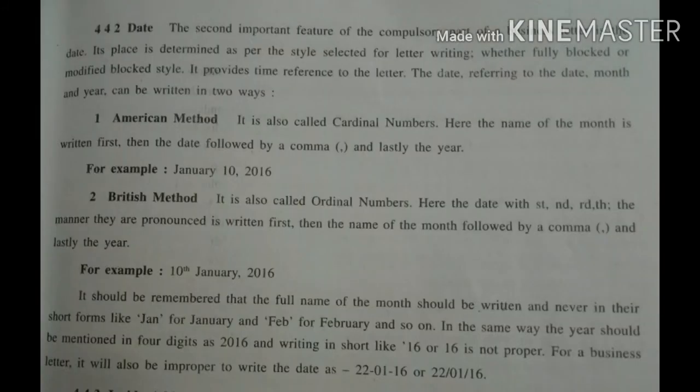Date: generally, the date is written on the right-hand side after the heading. Various methods of writing dates are there. One is the British method and the second is the American method. According to the British method, used in England, the day of the month is written first, followed by the month and then the year — for example, 15th July 2020. This method is also known as the ordinal method. In the American method, it is written as July 15th, 2020 — that is, the month is written first, then the date, and then the year. This method is also known as the cardinal method.